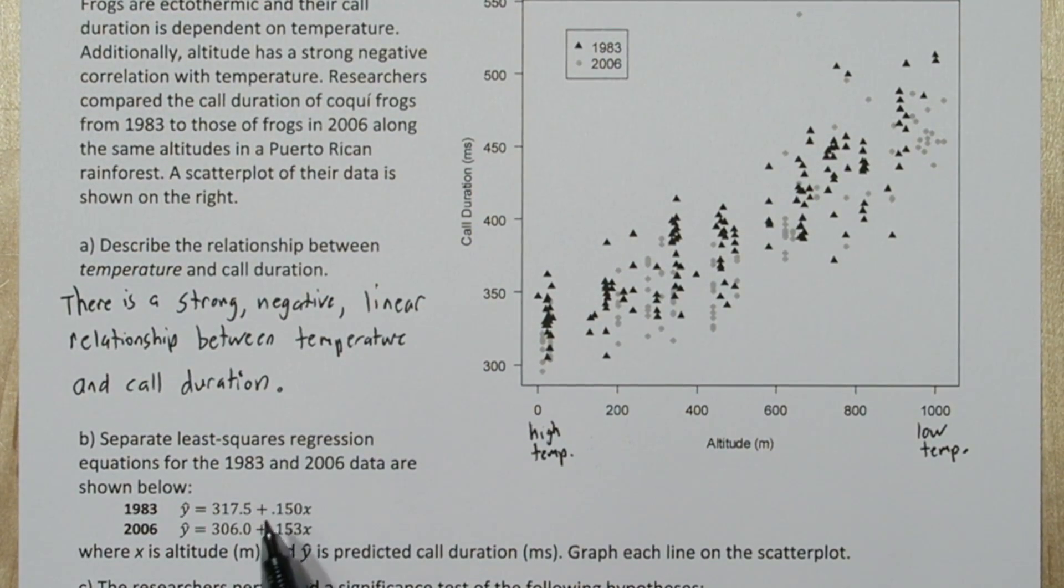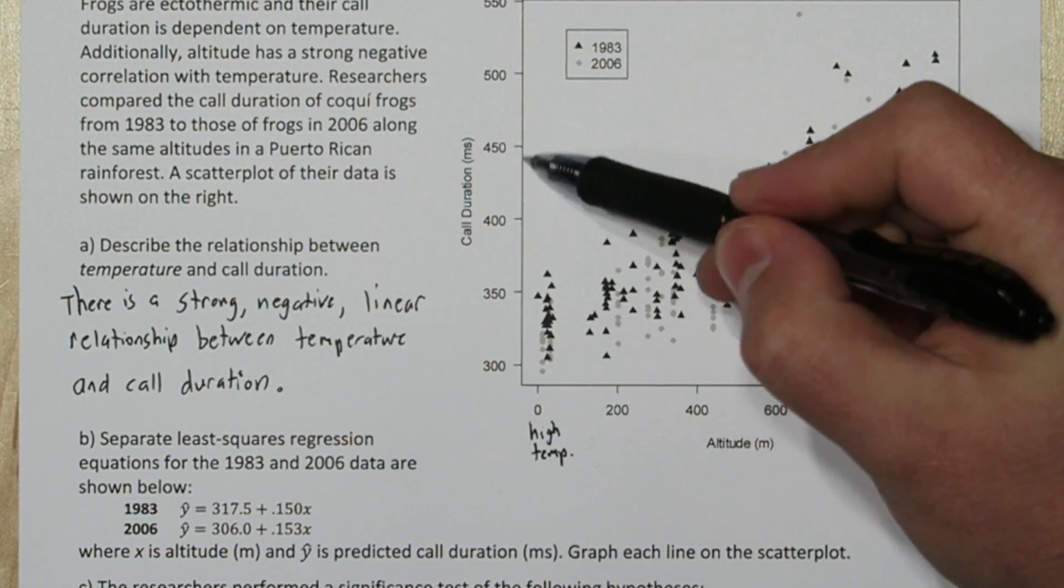Now we have two least squares regression equations. So here's our y-intercepts, but we need to be careful, zero's right here, so we can't graph our y-intercepts right on this axis.